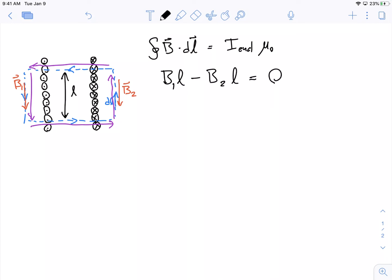And this is all equal to zero, because our enclosed current is equal to zero. And so, we see that we have this equation now. B1 L minus B2 L is equal to zero.